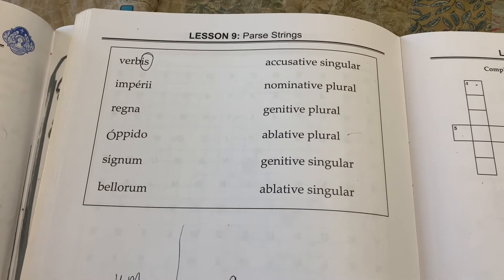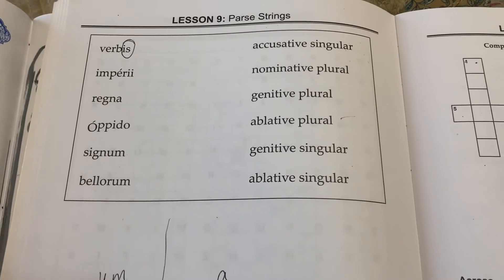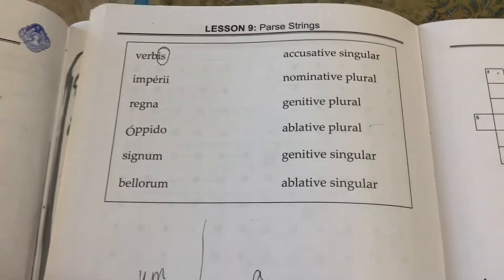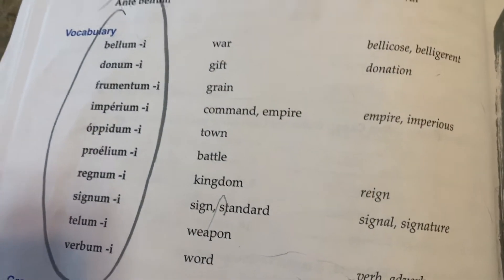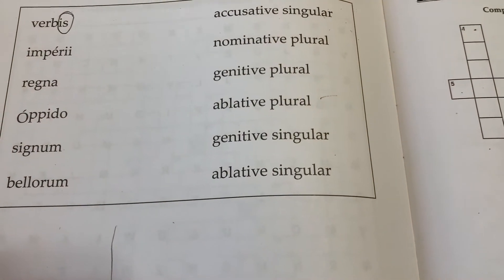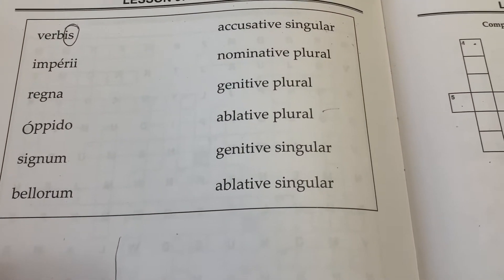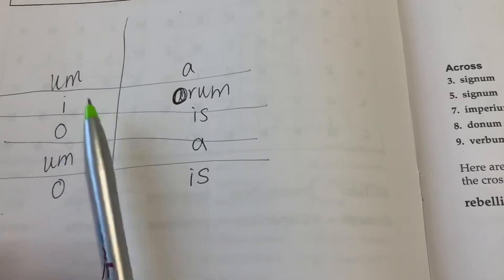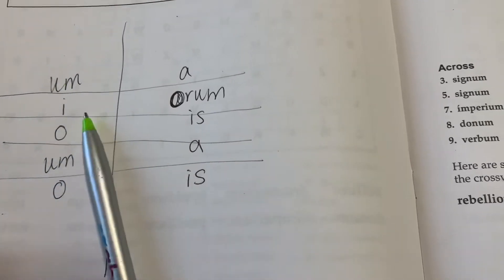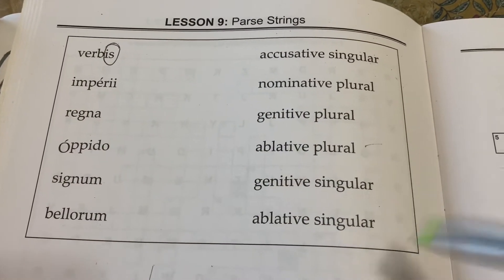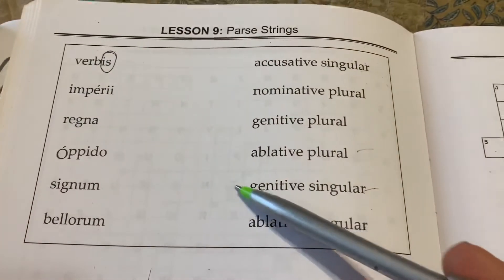Next one: imperie. Hopefully if I say 'imper,' it should jog your memory to one of your flashcard words from this week. Imperium, imperie — it means 'command' or 'empire.' So in our head, we have to remember what the 'e' ending is. In second declension neuter, the 'e' ending is only one thing: genitive singular. We come up and we see — is there a genitive singular? Yes, there is. And you would draw a line to connect the two.